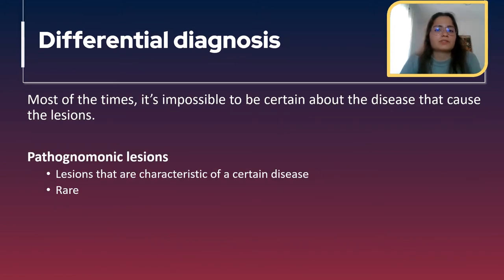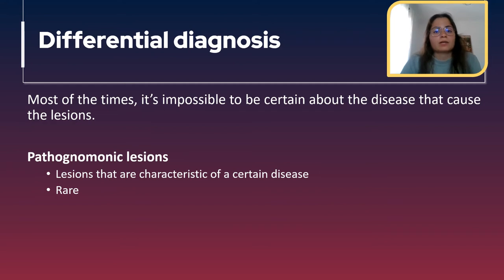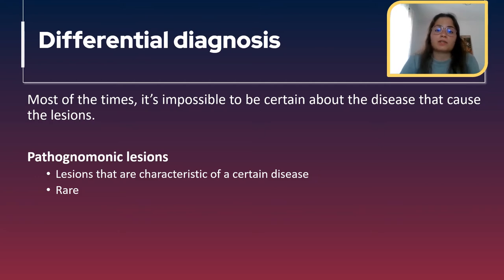Most of the time it's impossible to be certain about the disease that caused the lesions. It's better to have a wider differential diagnosis than to say it's a specific disease without certainty. Only when there are pathognomonic lesions can we say with 100% certainty that the individual had a certain disease. Pathognomonic lesions are those characteristic of a certain disease, and unfortunately there are very few of them.